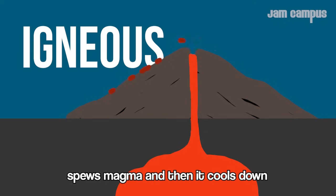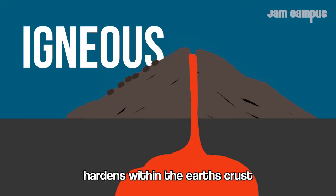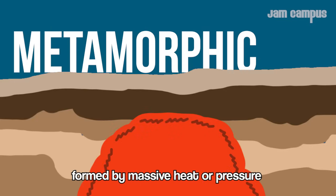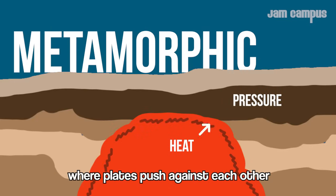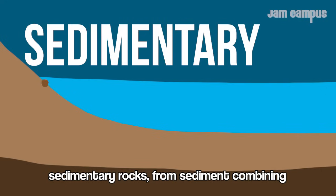it moves magma, which then cools down and hardens within the earth's crust. Metamorphic rocks are formed by massive heat or pressure — sometimes found near fault lines where plates push against each other. Sedimentary rocks form from sediment combining,